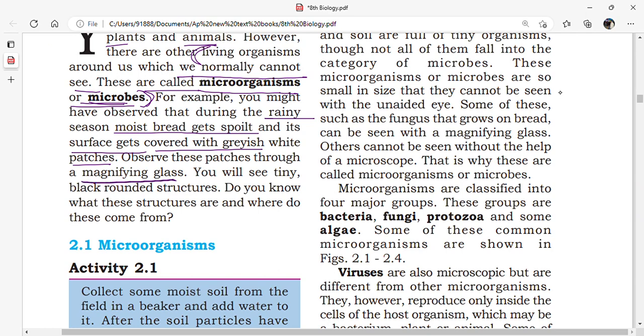we will see tiny black rounded structures. These are thread-like structures with rounded head-like structures present. These are called sporangia.